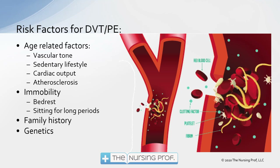Immobility also contributes — bed rest or sitting for long periods of time. People who sit at a desk all day are at risk, as we have a dependent area in the lower extremities that can promote clot formation. Family history and genetics are also involved. We think genetics may have a larger impact than previously thought, though we don't yet have much data on how to identify those genetic issues in patients.